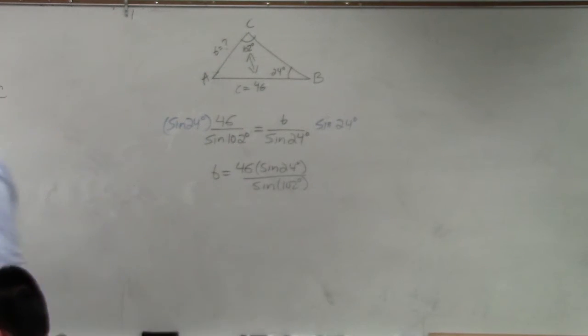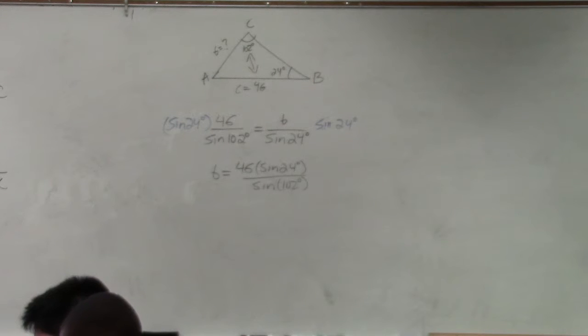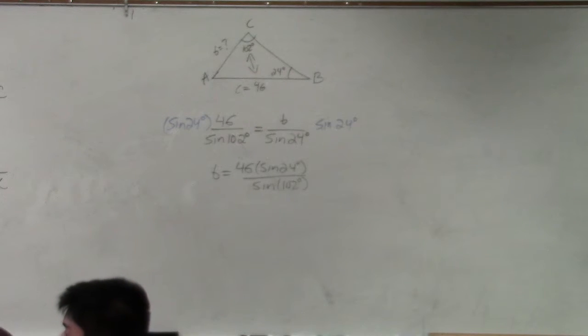So in my calculator, what I'll basically go ahead and do, make sure that I'm in degree mode. All right, then all I'm going to do is type in 46 times the sine of 24 degrees.